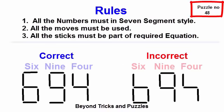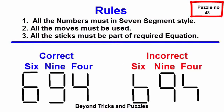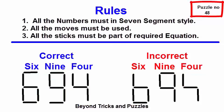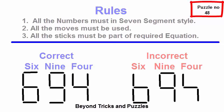Rules: Please note that all the numbers must be displayed in seven-segment style. For example, six, nine, and four should be displayed like this and not like this. All the sticks must be part of the equation. All the moves must be used.